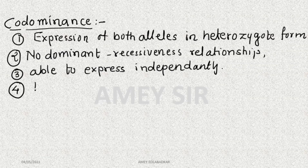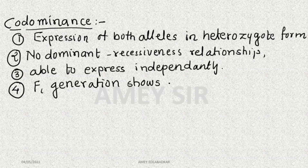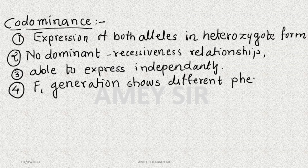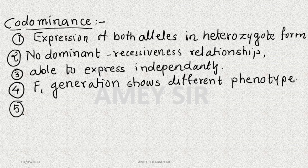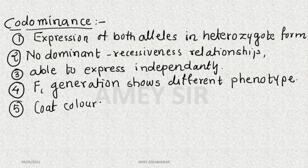Another important point: in co-dominance, F1 generation shows a different phenotype than the parents — similar to what we got in incomplete dominance. The best example of co-dominance is coat color — hair color on the skin — specifically coat color in shorthorn cattle.